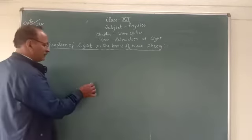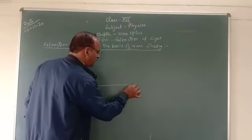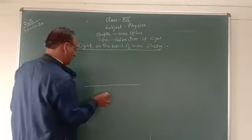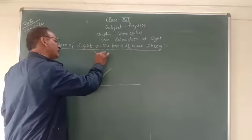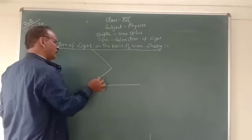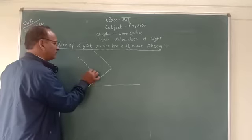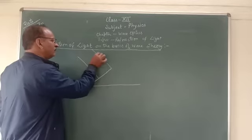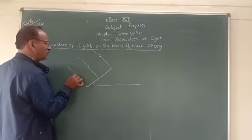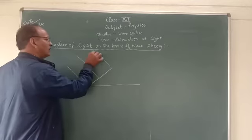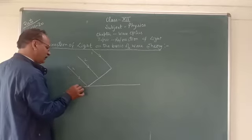For this purpose, we take three light rays. We consider angles small compared to the laws of refraction. The three light rays — one, two, and three — are incident on the boundary of two media.